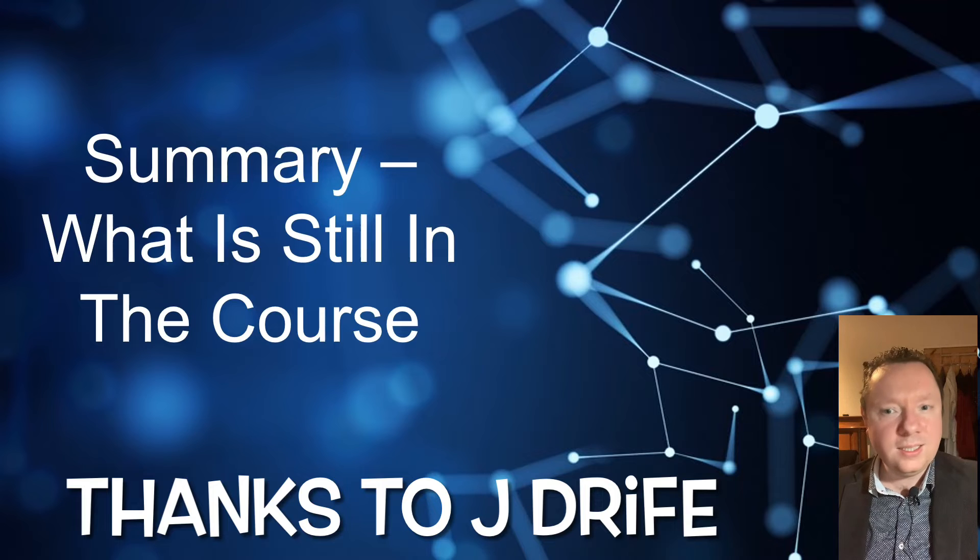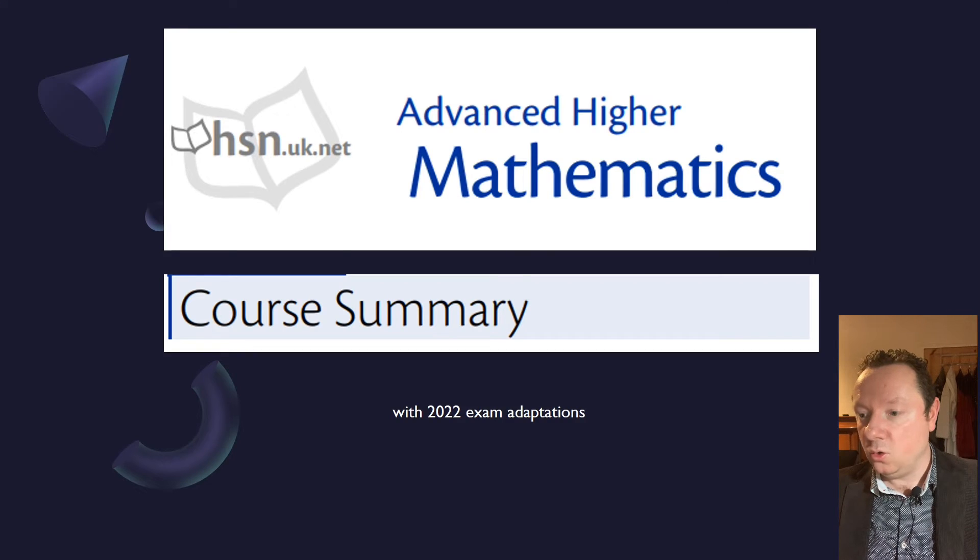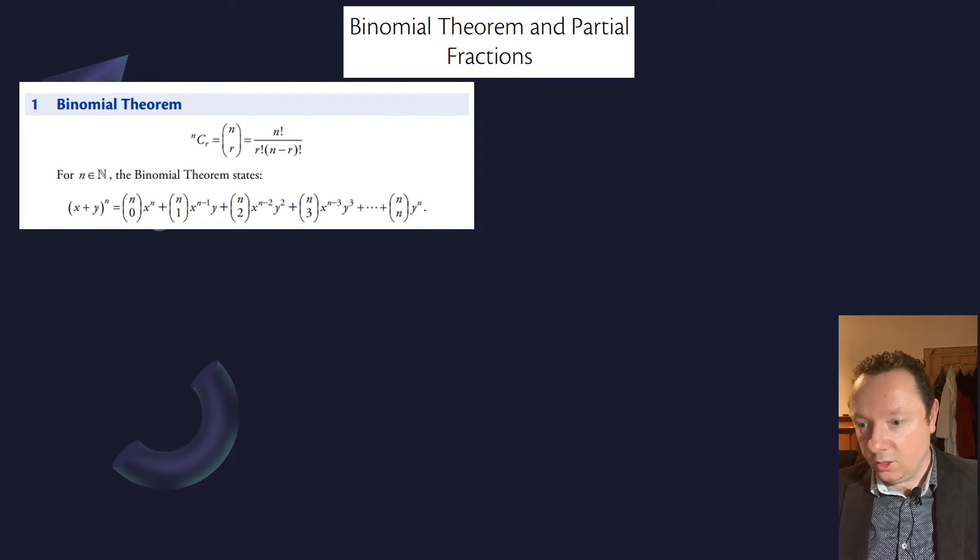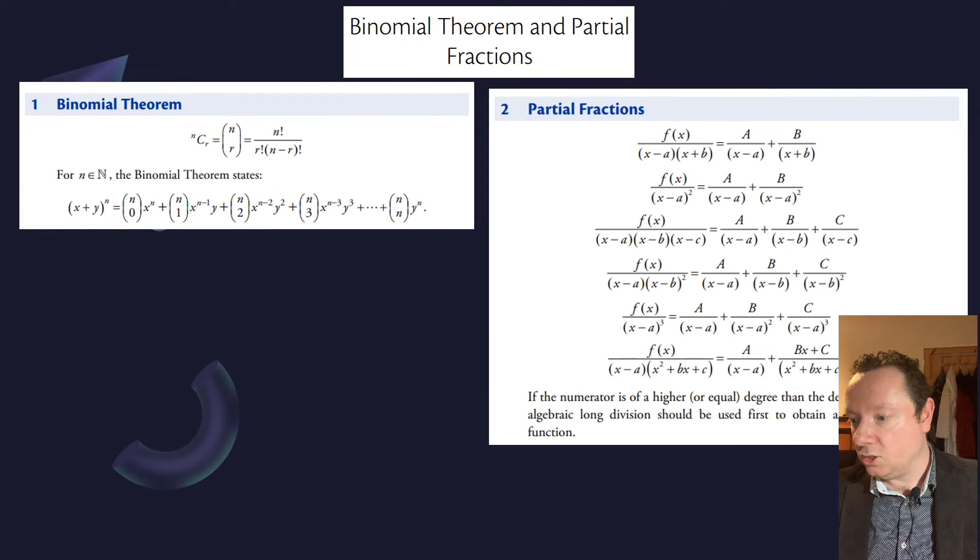Summary. What is still in the course then? Well, Advanced Higher Mathematics Course Summary. So, binomial theorem and partial fractions. You've got your normal binomial theorem there. Your partial fraction stuff.